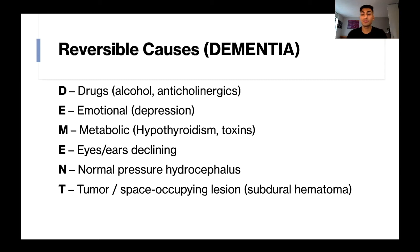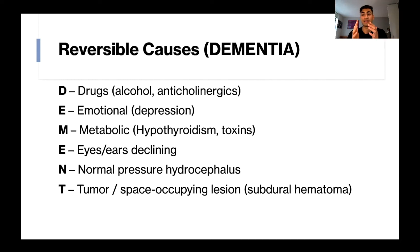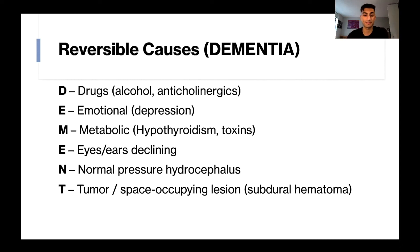T is for tumor or a space-occupying lesion, such as a subdural hematoma. The way this causes dementia is really similar to normal pressure hydrocephalus — again, we get this pressure and compression of the brain resulting in symptoms.